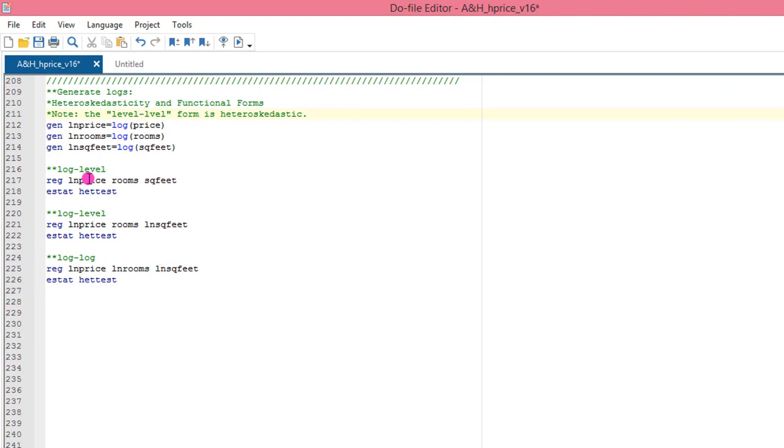So I have the codes written out in my do file. In the tutorial under detecting heteroskedasticity, we realize that the level-level formation is heteroskedastic. So the first thing we are going to do is to estimate the log-level model and test it for heteroskedasticity. Next, we perform the log-level-log model. That is my own augmented log-level model, and also put it to test.